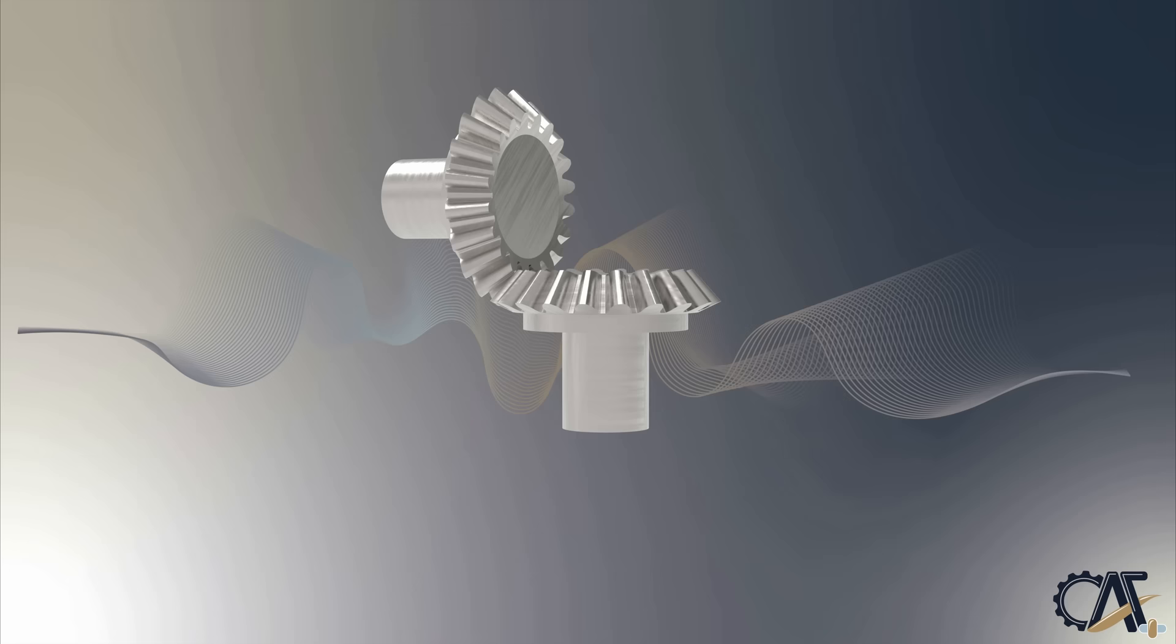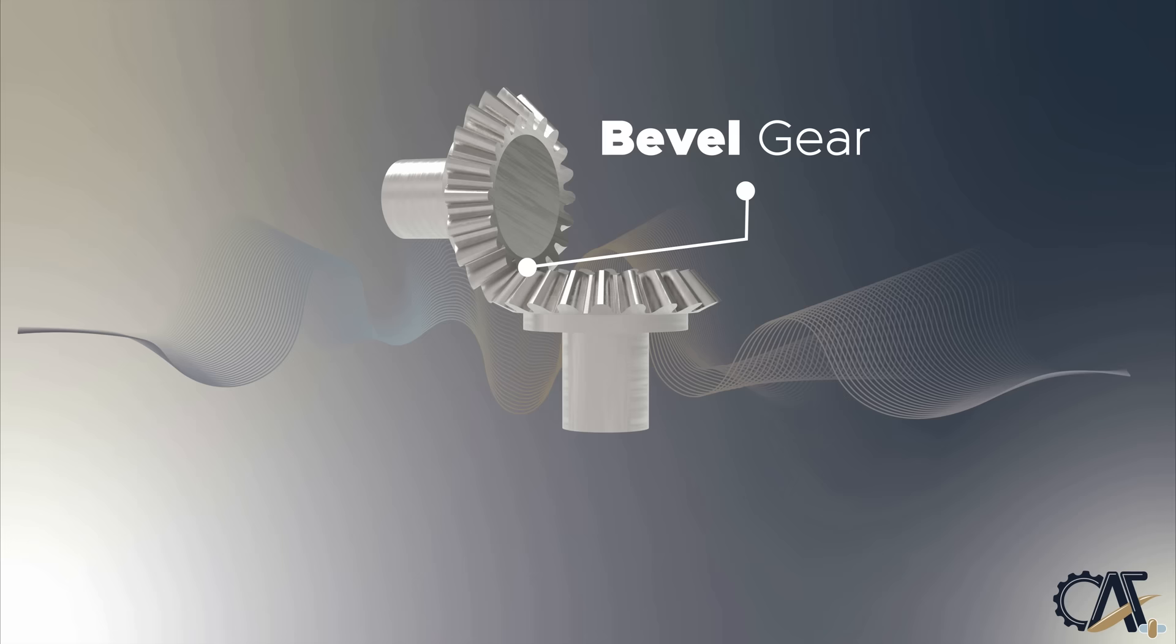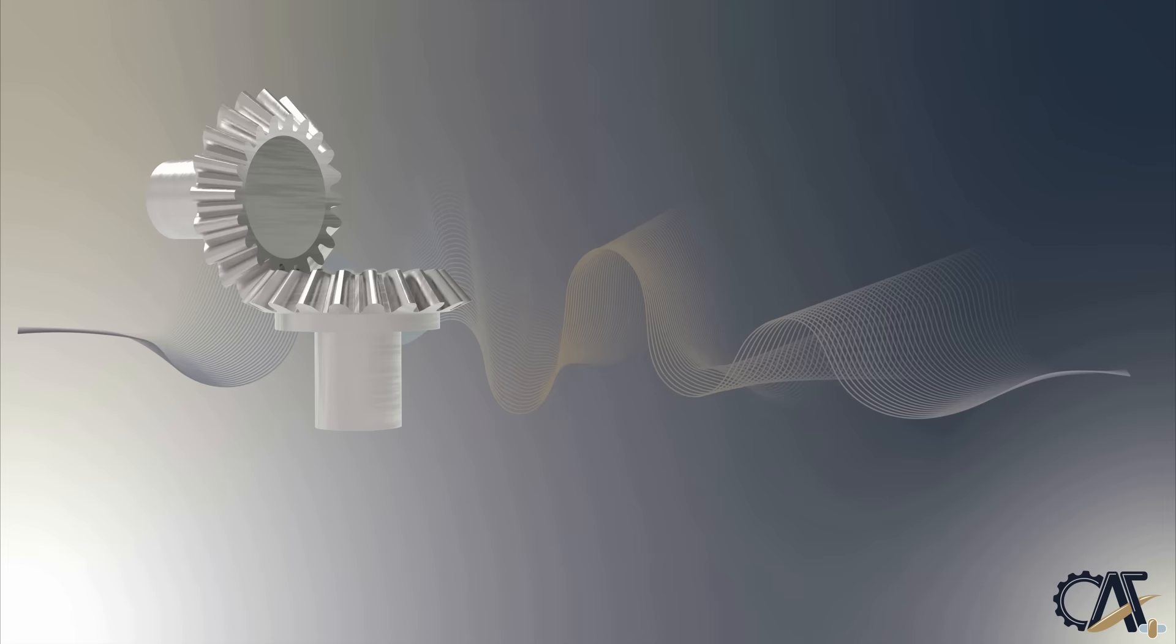Bevel gears have a cone shaped appearance and are most commonly used to transmit power between shafts that intersect at a 90 degree angle. They can be used at various angles, but most are tried at 90 degree angles. Applications where a right angle gear drive is required and two shafts cross each other make bevel gears the right choice.